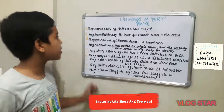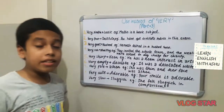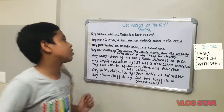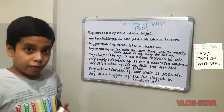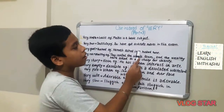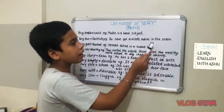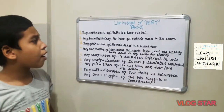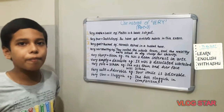Our next word is 'very poor.' Instead of very poor, we can say 'destitute.' For example, you have got destitute marks in this exam — it means you have got very poor marks in this exam.